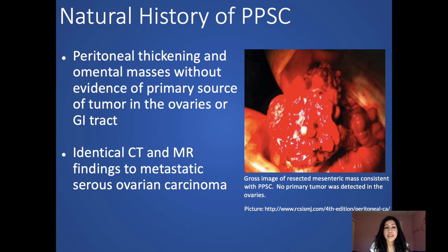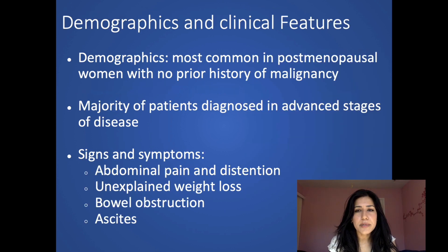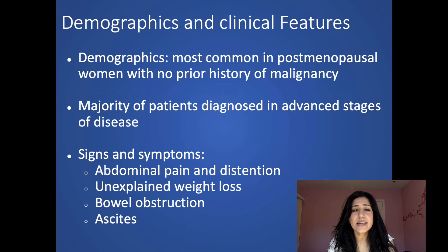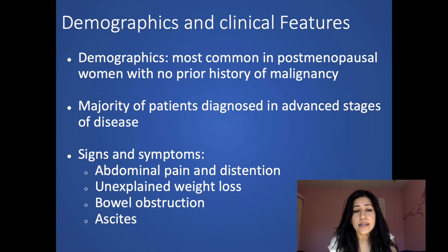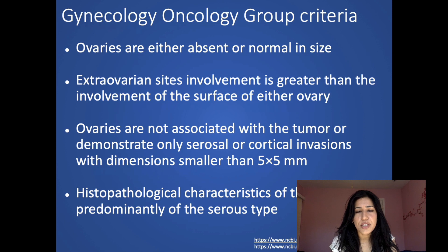Primary peritoneal carcinoma is basically peritoneal thickening and omental masses without evidence of a primary source of tumor in the ovaries or GI tract. It has identical CT and MR findings to metastatic serous ovarian carcinoma. It's most common in postmenopausal women with no prior history of malignancy, and most patients are diagnosed in advanced stages. The symptoms are very nonspecific and can include abdominal pain, distension, ascites, weight loss, or bowel obstruction.